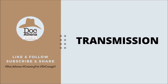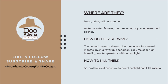Now let's look at transmission. How is Brucella transmitted from one species to another? Brucella is found in blood, urine, milk, and semen of infected animals. When they contaminate their environment, they can be found in water, aborted fetuses, manure, wool, hay, equipment, and clothes. The bacteria can survive outside the animal for several months given a favorable condition — specifically places that are cool and moist, with high humidity, low temperature, and without sunlight.